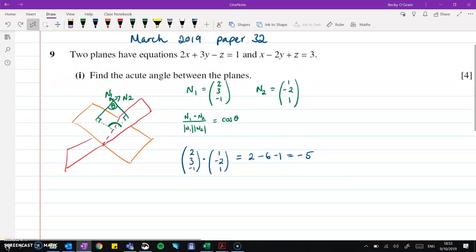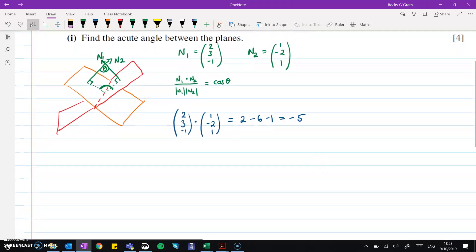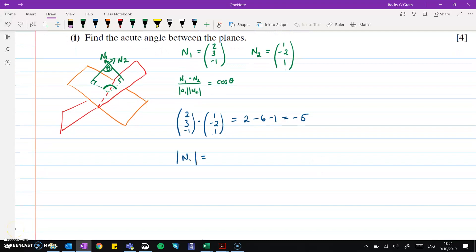And then we'll just need to get the modulus of those two vectors as well. So the modulus of n1 is the square root of 2 squared plus 3 squared plus minus 1 squared. And that gives us an answer of root 14. And if we do the same for n2, we get root 6. Then pop that back into the equation that we had up at the top here.